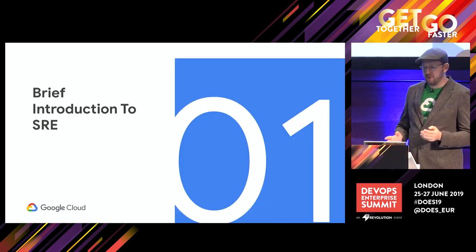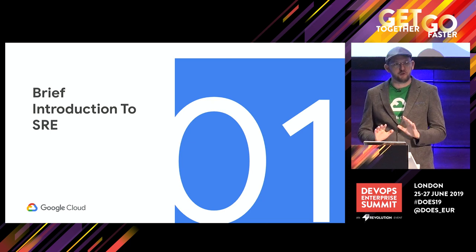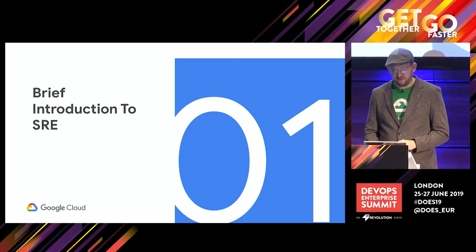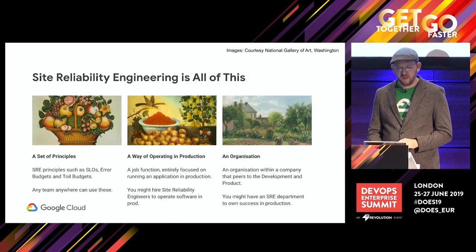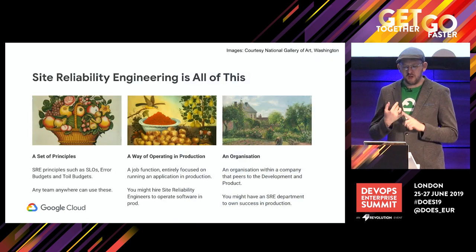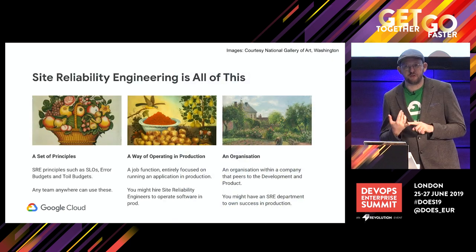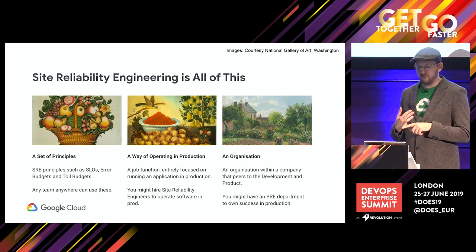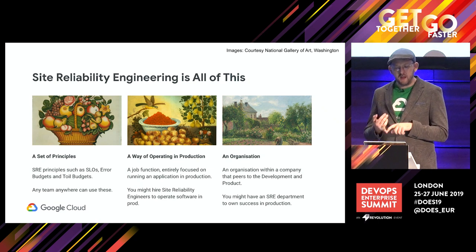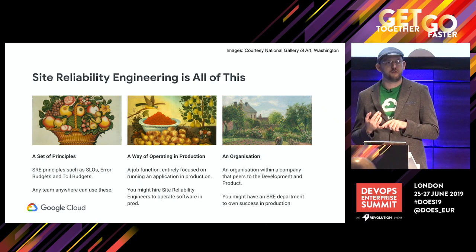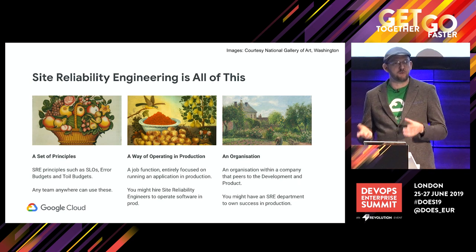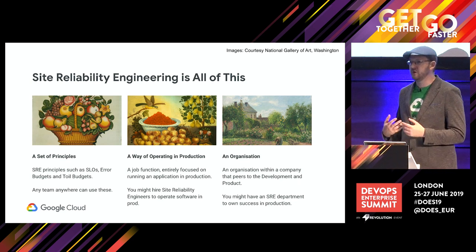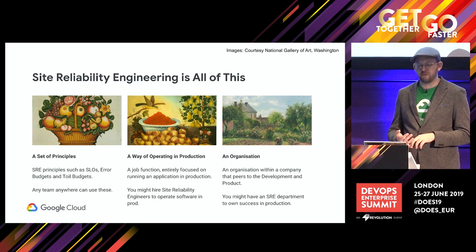A brief introduction to SRE — I'm not going to go super deep, but I want to make sure we're on the same page. Site Reliability Engineering is all three of the following things: it is a set of principles that any team can use to do Site Reliability Engineering. Any team can do it — it's just a set of principles you can use to run your systems in production.